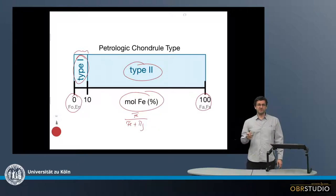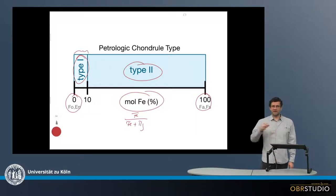This is quite different in ordinary chondrites, in which the fraction of type 2 chondrules, depending on the petrologic type of the chondrites, can be quite high, higher than maybe 50% or something like this.